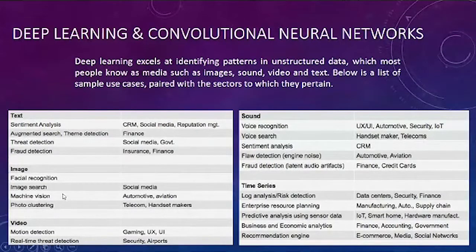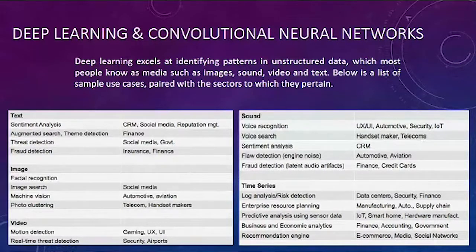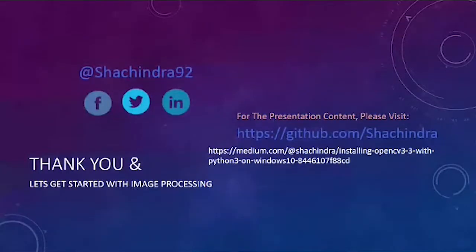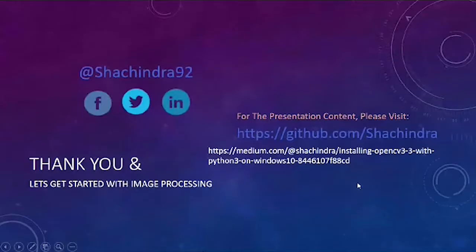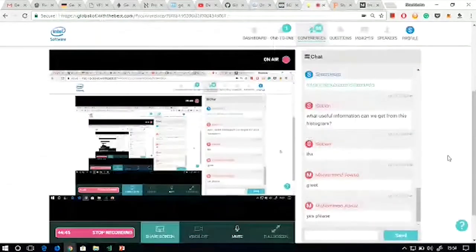For facial recognition applications, we can use image searching, machine vision, photo clustering, and social media. We are also able to understand the make and model of a car, and it is also used in telecom and handset markets. Thank you for watching this session. You can find the entire content — I'm uploading all the code to GitHub. You can also see a link for installing OpenCV on Windows 10, which has step-by-step instructions to include OpenCV on either your computer or Raspberry Pi.